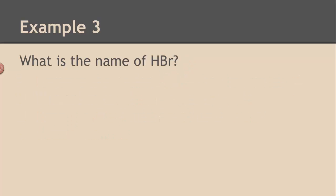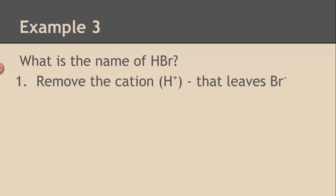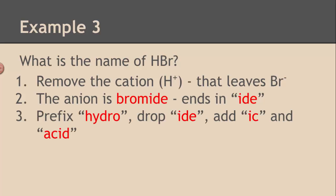Here's a third example. The acid is HBr. Take away the cation, H+. That leaves Br-. That's not polyatomic. There's only one atom there. Br is from bromine, which means it's bromide, -ide ending. Drop the -ide, put the prefix hydro in front, put the -ic ending at the end, and then add the word acid, hydrobromic acid. So it's all about the name of the anion.